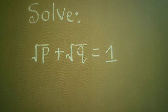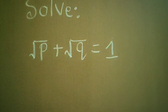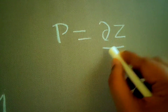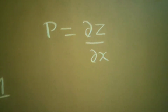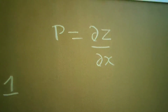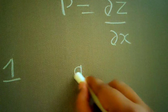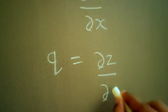Let's solve this question from partial differential equations. It's a non-linear partial differential equation because you can see the power of p and q is half. Now, p in our notation was del z by del x, and because its power is half, we say it's a non-linear PDE. The same is true for q, where q was del z by del y.